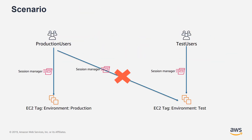In our scenario, we are going to assume that we have two groups of IAM users: production users and test users. IAM users that are members of production users should only be able to use Session Manager to connect to instances tagged with environment production, and IAM users that are members of test users should only be able to connect to instances tagged with environment test. Another requirement is making sure that users are only able to terminate the session that they opened, and not other users' sessions.